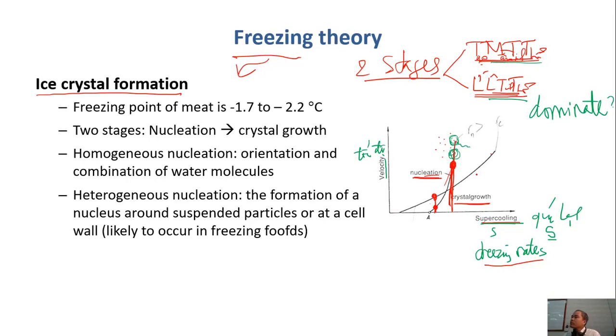And the result is, when you do fast freezing, the result is there are many, many small crystals, right? When you do slow freezing, there is time for the crystals to grow, so less number but larger in size.